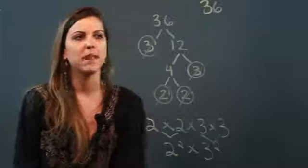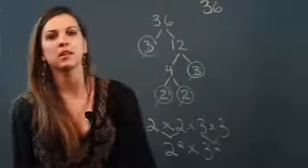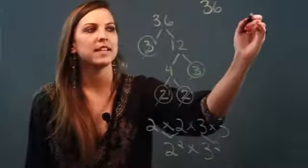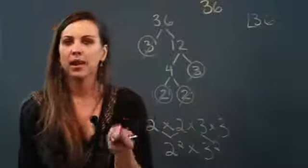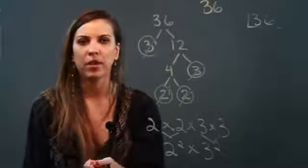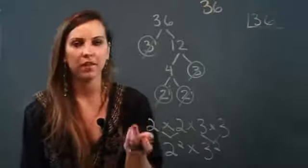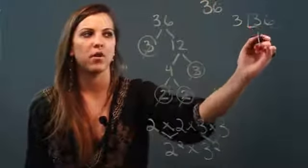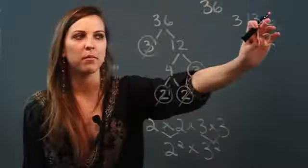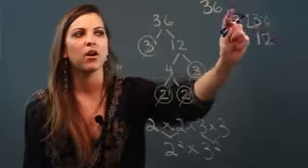Now my second method would be to use something called a division ladder, where I take the number 36 and I'm going to draw an upside down division bar. And I'm thinking about a prime number that I know that goes into 36, and one that comes to mind for me is the number 3. And 3 goes into 36 twelve times. Okay, so you wrote the number out, put an upside down division bar, thought of a prime number that goes into it and divided it.